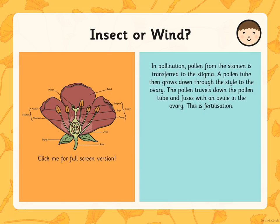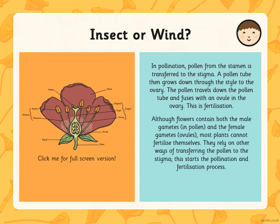Plants can be pollinated by insect or wind. In pollination, pollen from the stamen is transferred to the stigma. A pollen tube then grows down through the style to the ovary. The pollen travels down the pollen tube and fuses with an ovule in the ovary — this is fertilization. Although flowers contain both male gametes in pollen and female gametes in ovules, most plants cannot fertilize themselves. They rely on other ways of transferring pollen to the stigma to start the pollination and fertilization process. Two ways that flowers can be pollinated are by insect or by wind.